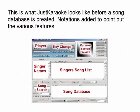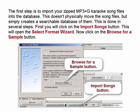This is what Just Karaoke looks like before a song database is created, with notations added to point out the various features. The first step is to import your MP3+G karaoke song files into the database. This doesn't physically move the song files, but simply creates a searchable database of them. This is done in several steps — first you will click on the Import Songs button, which will open the Select Format Wizard.